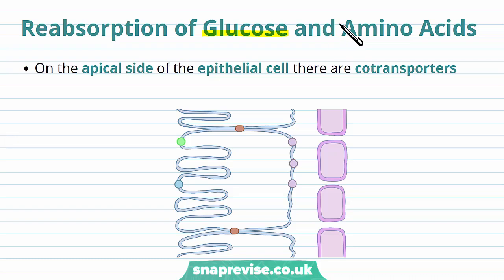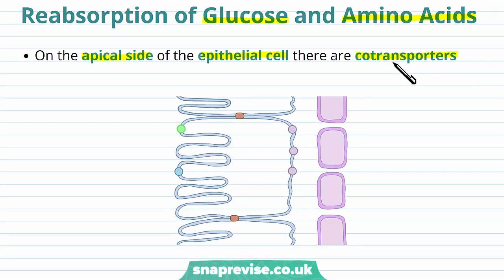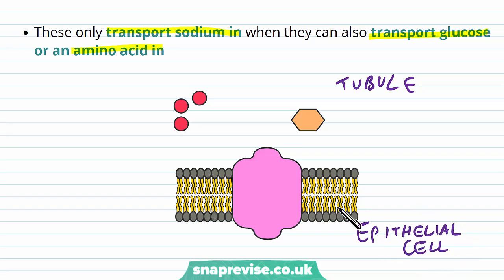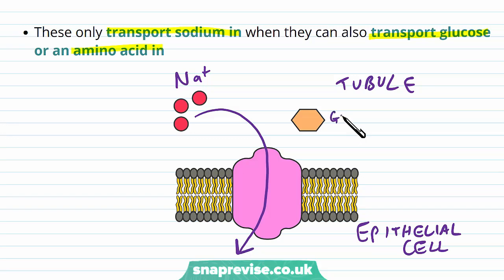We also need to reabsorb glucose and amino acids, because they are important food molecules that get filtered through due to their size. On the apical side of the epithelial cell there are co-transporters, which transport two types of molecules together at the same time — molecule X and molecule Y both travel through together, and one cannot go through without the other. The co-transporters at the kidney only transport sodium in when they can also transport glucose or amino acids. Sodium ions in the tubule travel through these co-transporters into the cell, and glucose or amino acids can only pass through if sodium is going through too.